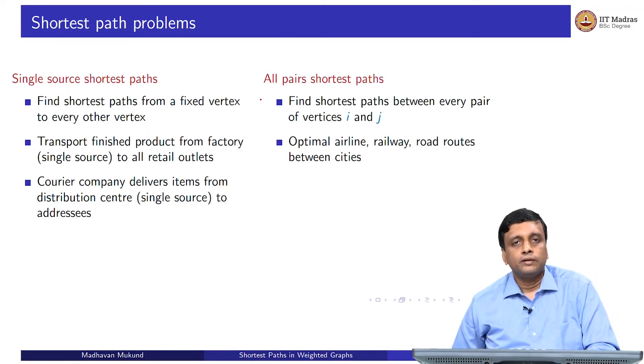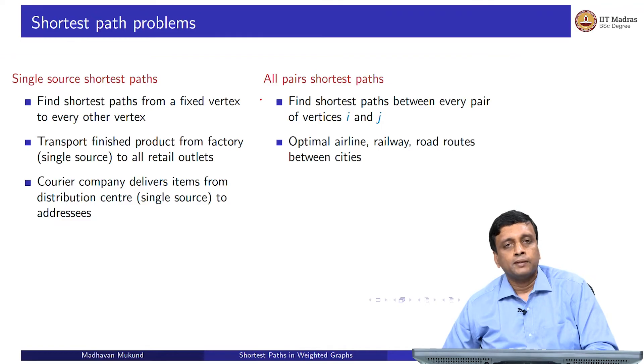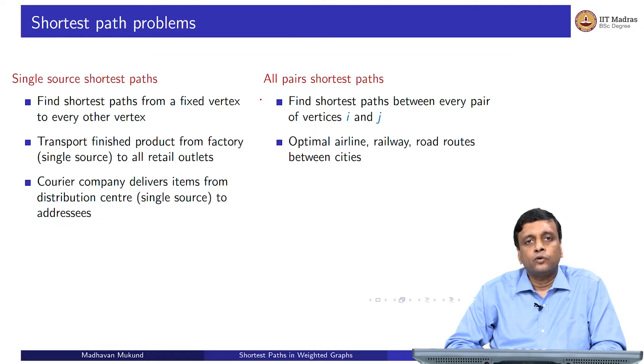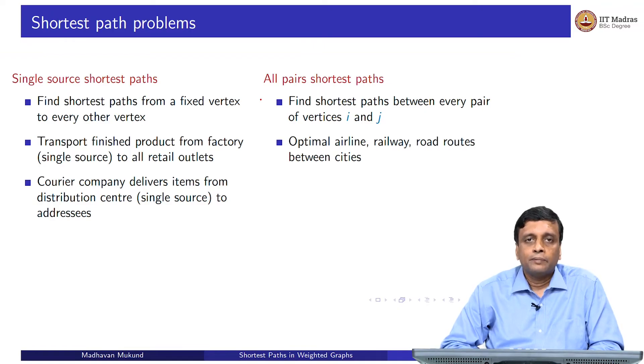Another problem is to find the shortest path between all pairs of vertices. For instance, if you are running a travel website, then at any given point, a customer might ask to go from any city on your website to any other city, and you must be able to find out in terms of different quantities - time, price, whatever - the best way. You need to quickly compute for every pair of cities, you need to be able to answer this question. This is an all pairs shortest path problem.